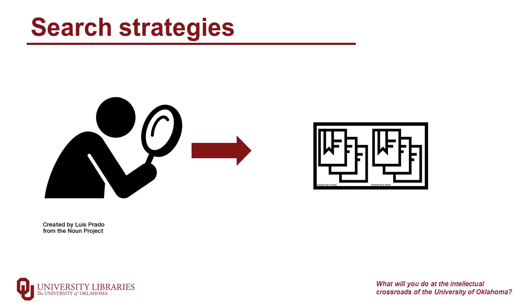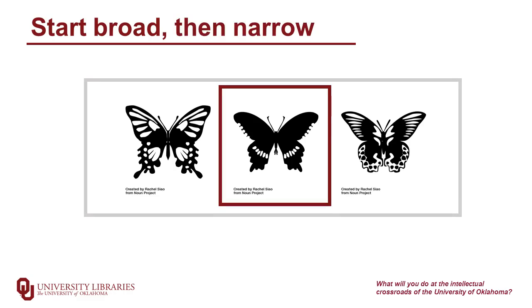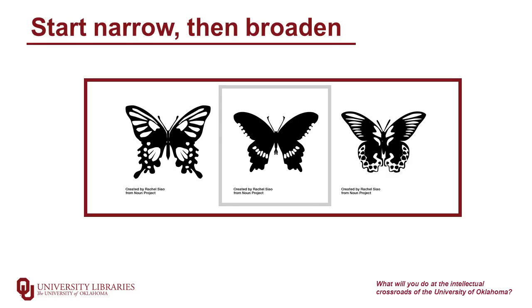Sometimes, even just a few key papers can send you into the right place in the literature to get the context that you need, and you can also use those results to help you launch more specific searches. To get to those few key papers, or those 50 to 200 results that you're looking for, there are a couple different approaches. You could start broad and then narrow your search terms or filters to get fewer results, or you can start narrow with very specific search terms and topics, and go broader.